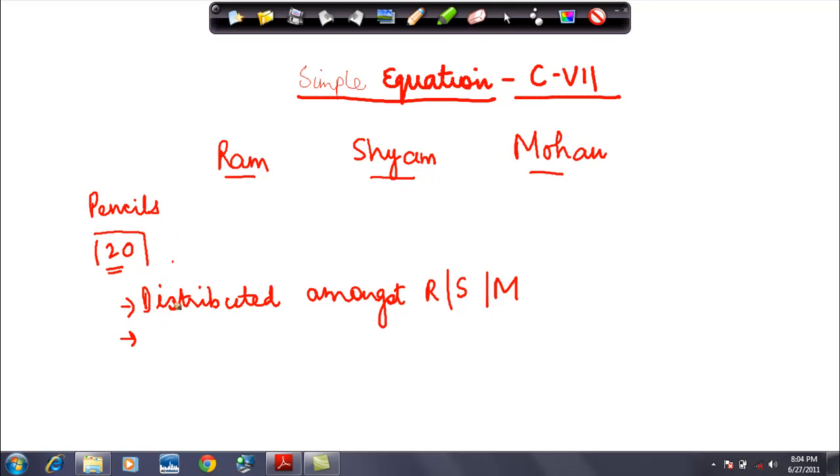I was given a hint. This is just like solving a puzzle and these are very interesting things. What hint I was given was that whatever is the number of pencils which were given to Sham, Ram and Mohan both had one pencil more than Sham.